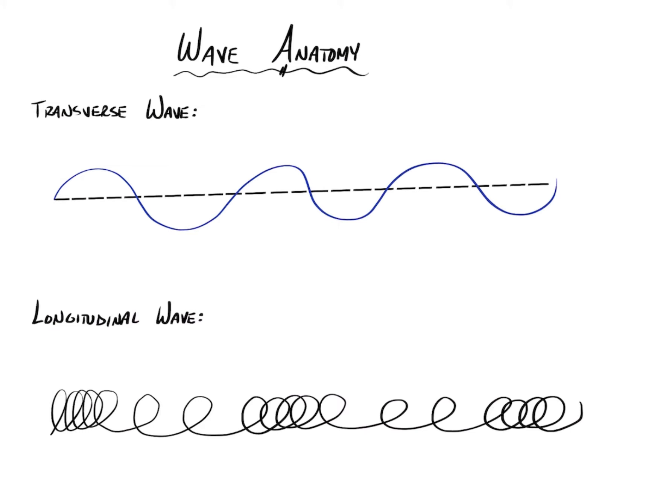So in order to discuss these and understand anything that we might read or come across in more detail, we need to understand what we call wave anatomy. There's characteristics of both of these types of waves. It's just terminology that we essentially have to memorize so that we know how to analyze these properly, and we can use some of this terminology when we're furthering our understanding of what's going on with these. So I'm going to start with a transverse wave, and then I'll explain the longitudinal wave.